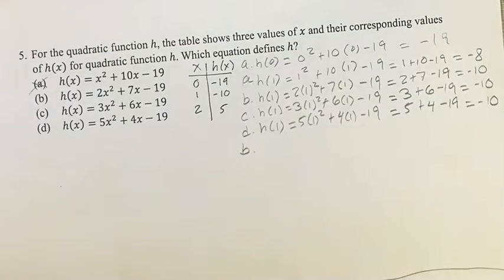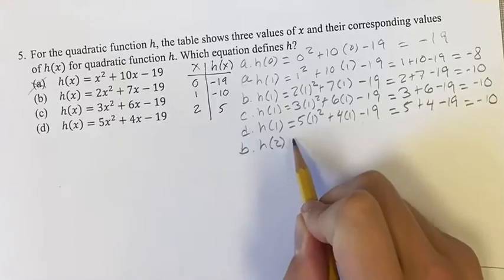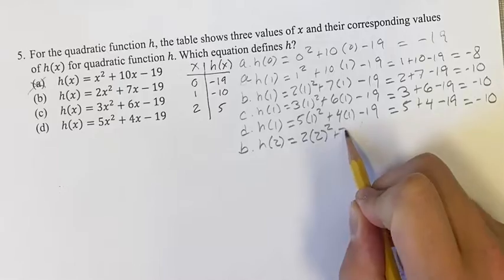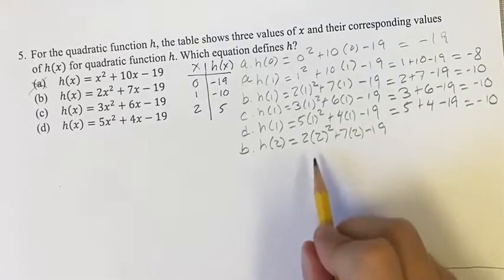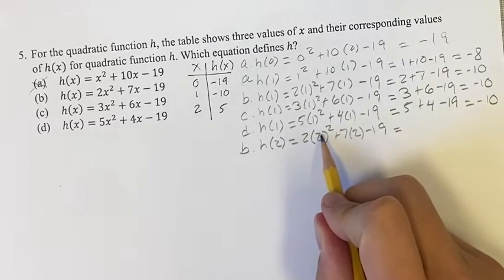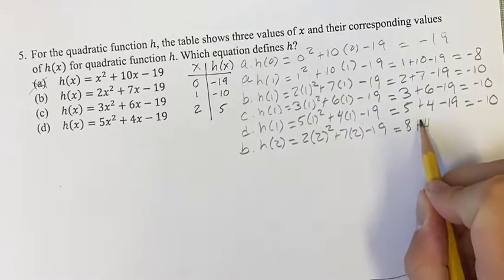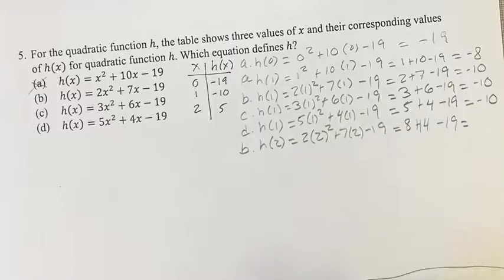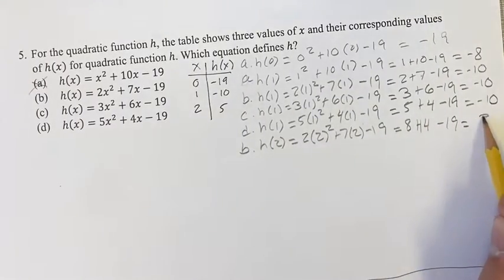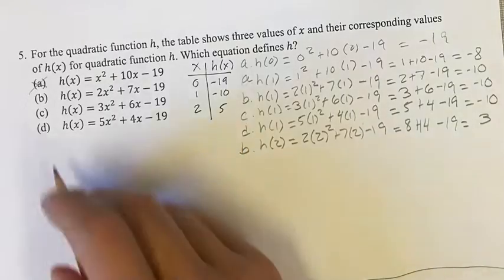h(2) is going to equal 2(2²) + 7(2) - 19, just plugging in 2 for x. 2² is 4, 4 times 2 is 8, plus 7 times 2 is 14, minus 19. This is going to be 8 + 14 = 22. 22 - 19 = 3. So the answer we were looking for here was 5, so b is not going to be the answer.